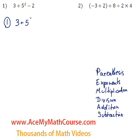So 3 plus 5 squared minus 2. What do we do first? Well we don't have a parenthesis or a set of parenthesis in this expression. So we're going to start with exponents. We have an exponent, 5 squared. 5 squared is just 5 times 5, which is 25.